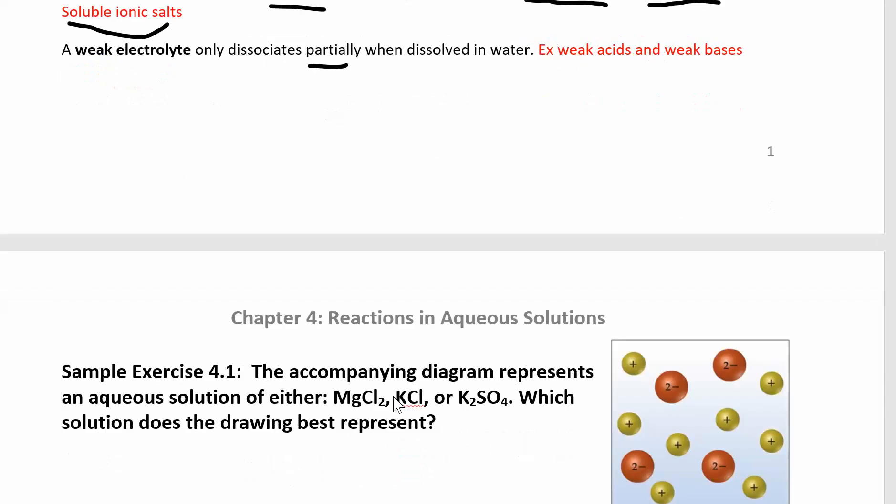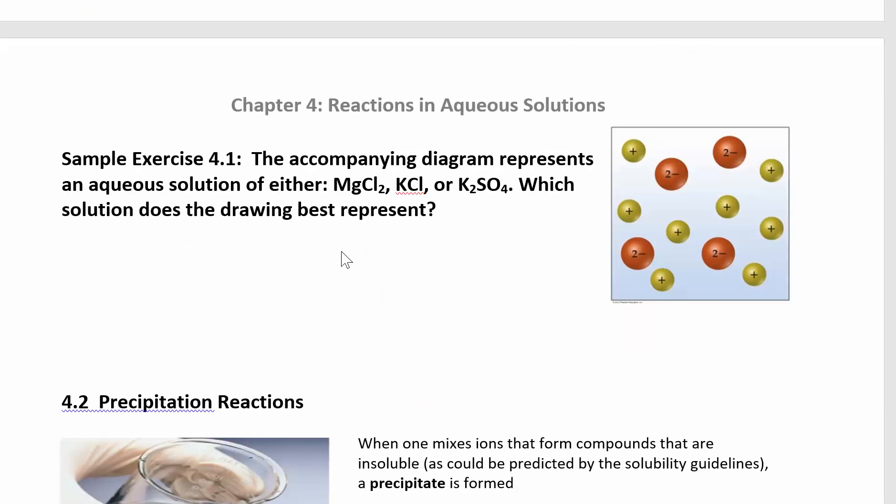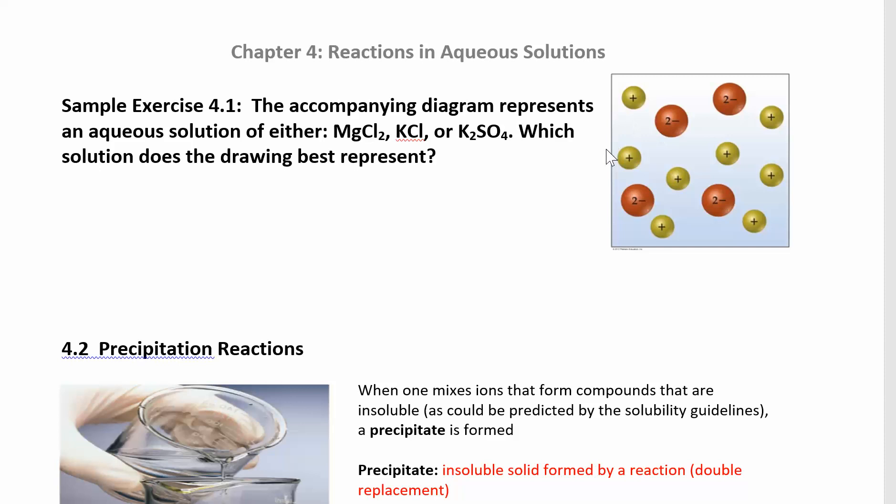Let's look at a little example of dissociation. Here's a picture. We have ions in a solution. We have a couple positive ions. We have a minus two ion. And the question's asking us, so look at this diagram. Is it magnesium chloride? Is it potassium chloride? Is it potassium sulfate? Which solution does the drawing best represent? To answer this question, let's take each one of these ionic compounds and figure out what kind of ions represent them.